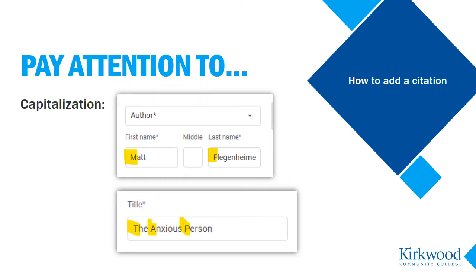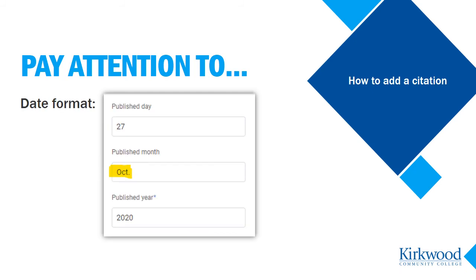There are two things I want you to pay attention to where the citation tool doesn't guide you. First is capitalization. The tool will format names and titles exactly how you type them in, only adding punctuation and italics where it's needed. Also, the citation tool won't format the date for you. For the day, just enter the number if there is one. For month, enter the abbreviated month, or the full month for May, June, or July. Then enter the year.